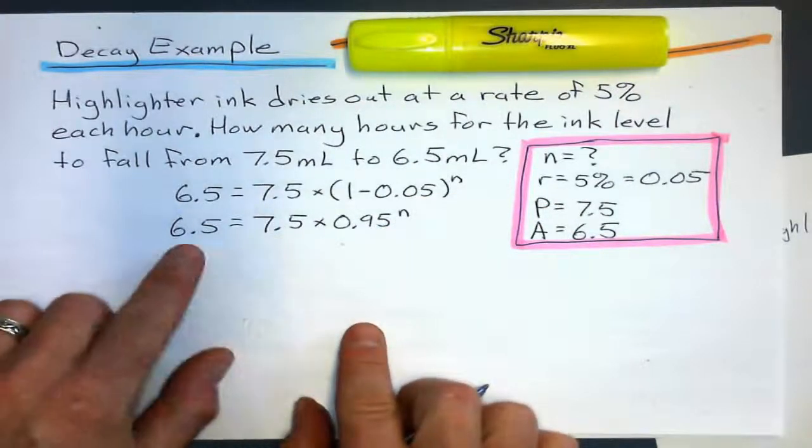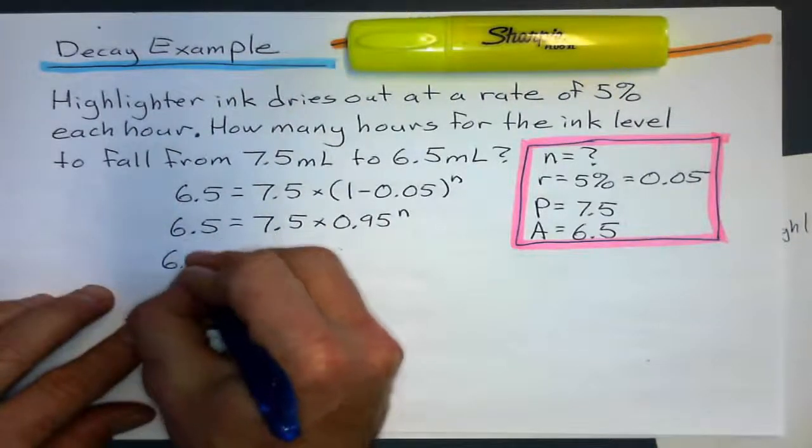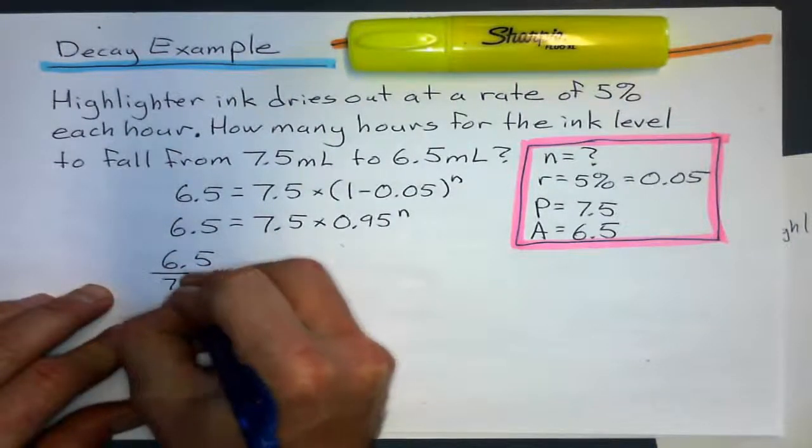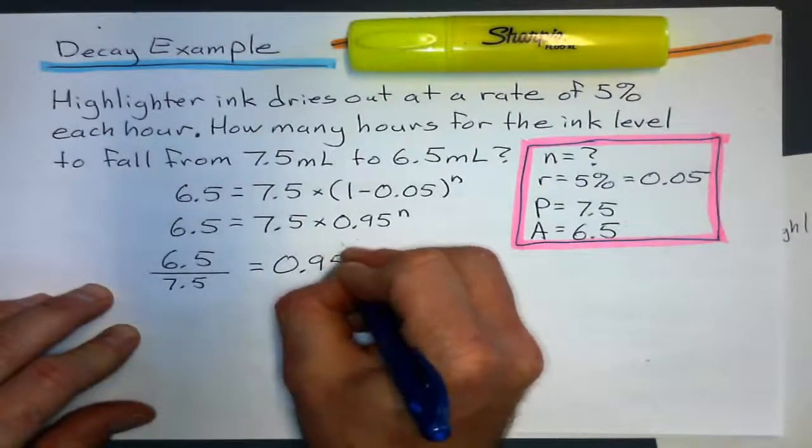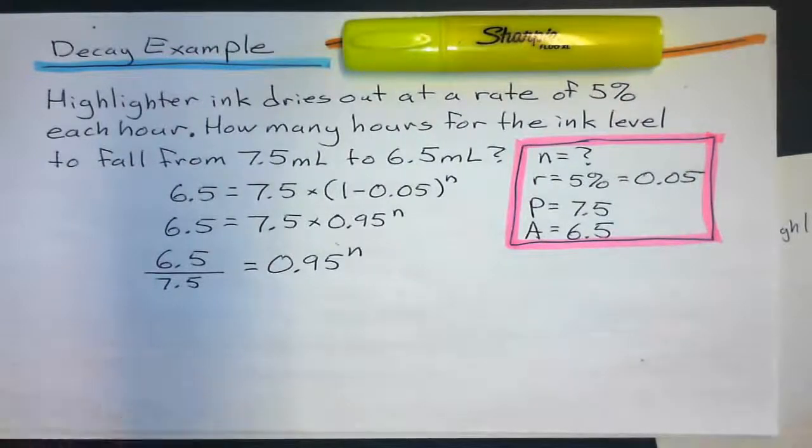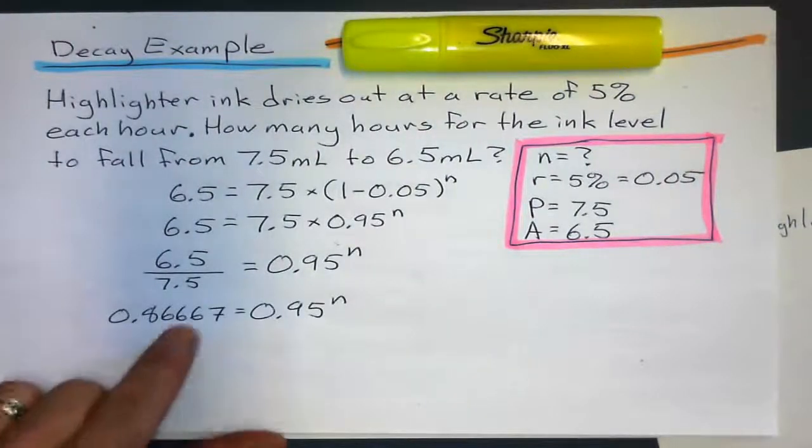Same as last time. I'm going to divide. I'm going to take 6.5 and divide it by 7.5 to get a decimal. And this decimal is not going to be as clean as my other one.